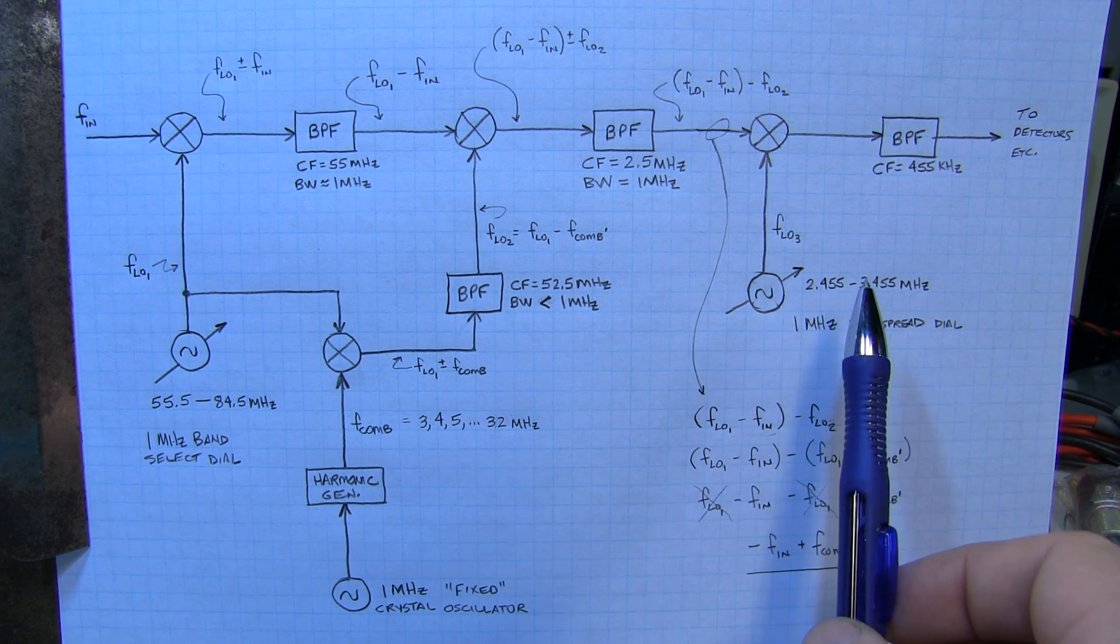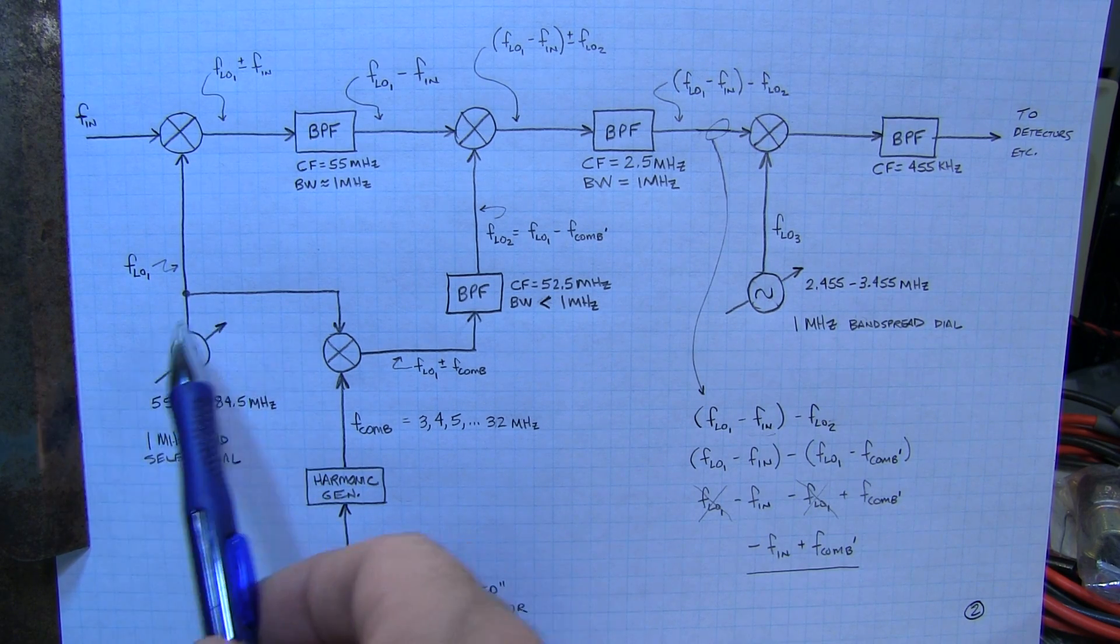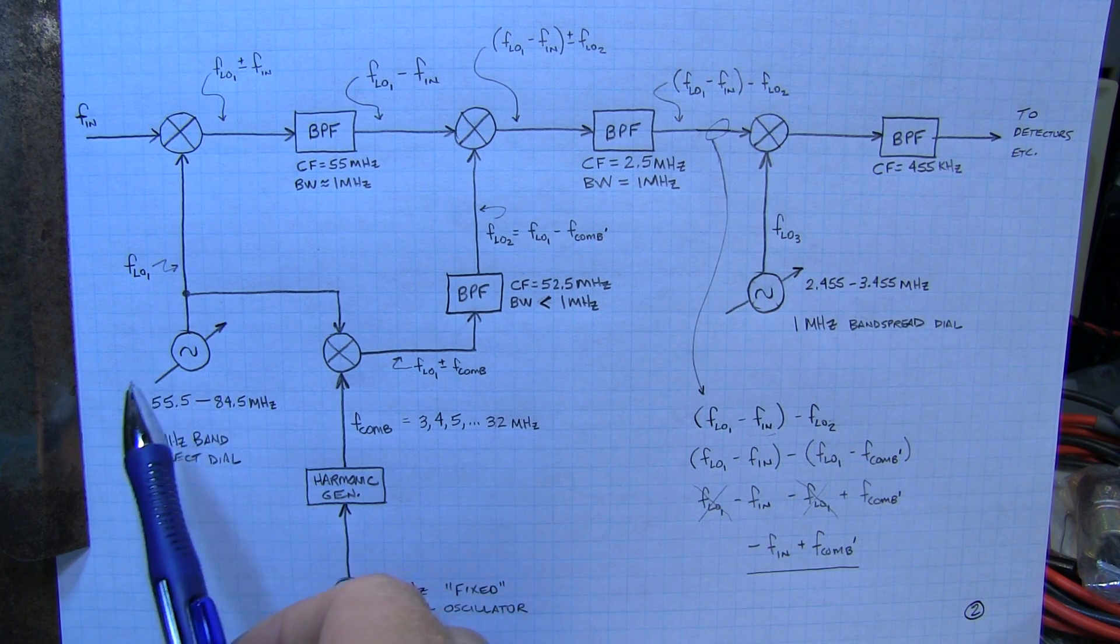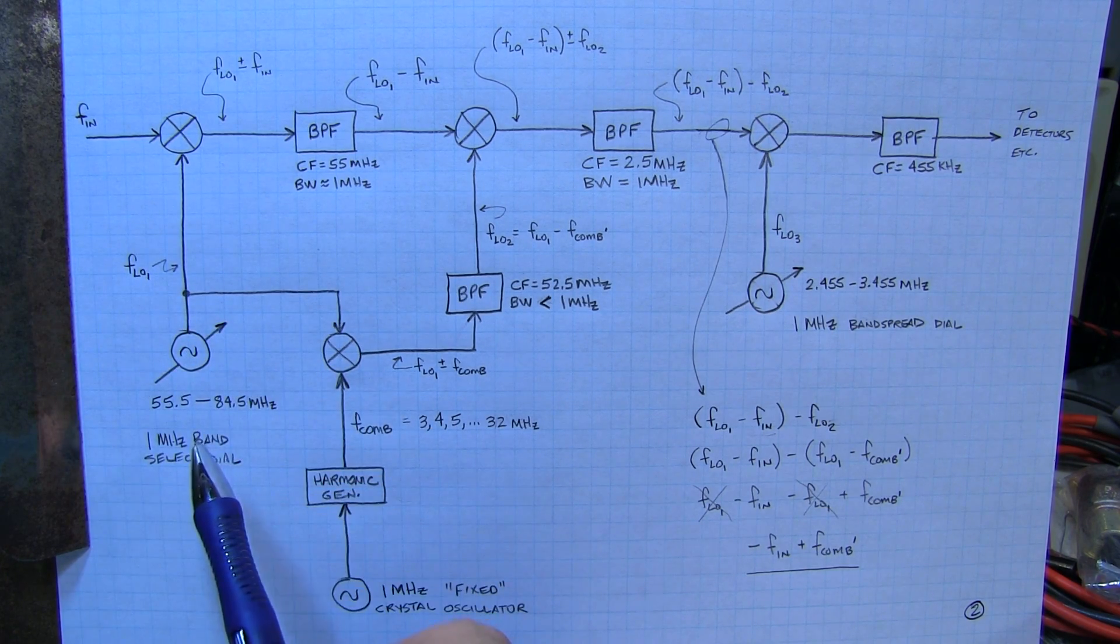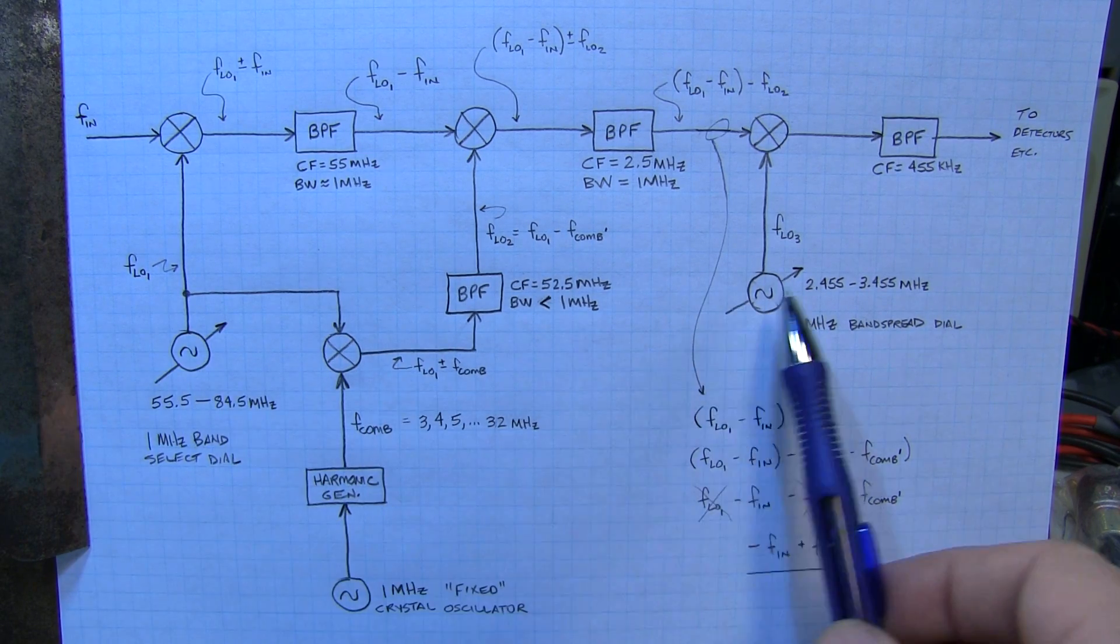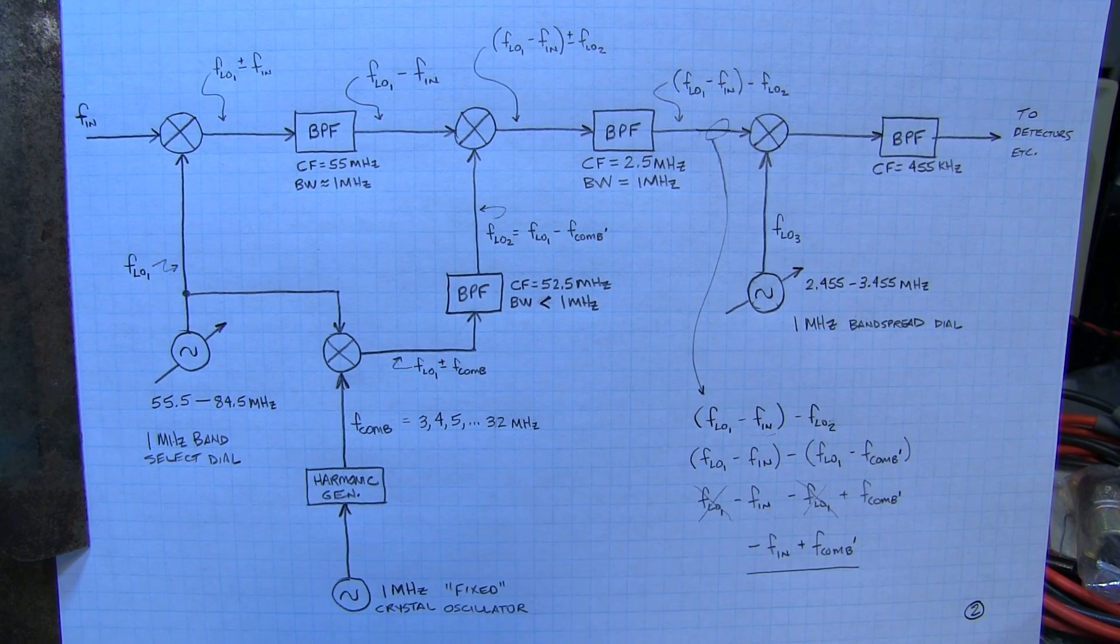So the tuning of a Wadley loop style receiver involves two dials. One to select the 1 MHz frequency band that we want to go listen to within the entire frequency coverage of the receiver. And then a second dial to fine tune over that 1 MHz frequency range to the desired signal of interest. So let's take a look at a few of these signals inside the FRG7.